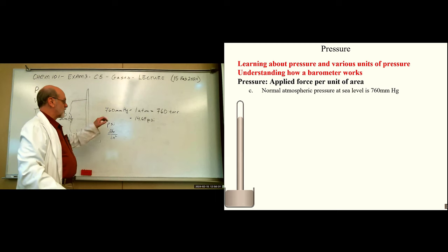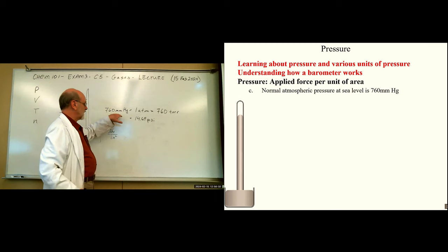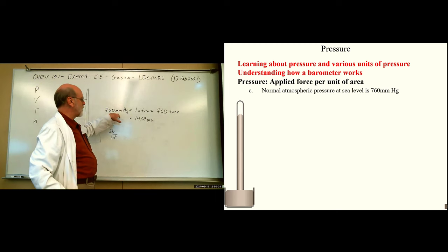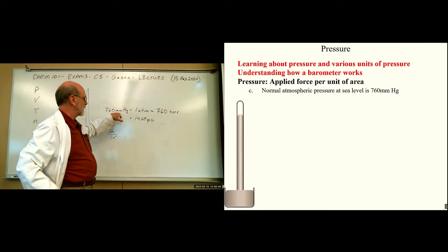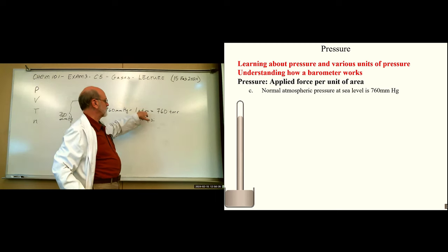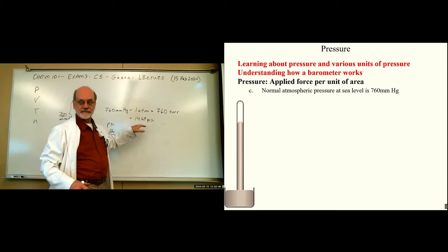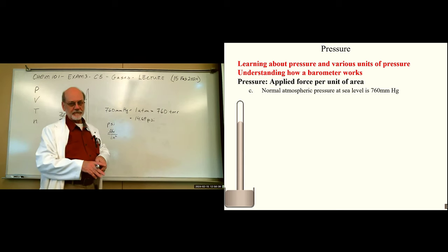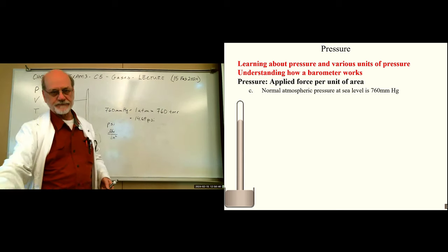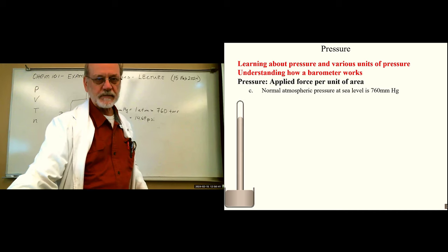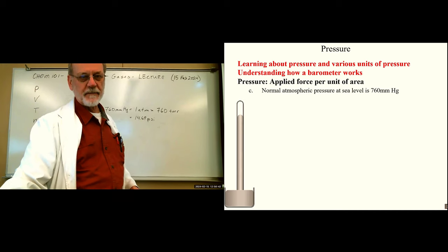Pressure is defined as force per unit area. When we measure pressure in the tires of our car, we measure it in PSI — pounds per square inch. That's a ratio we can understand as an intensive property, because if you measure a larger area, you're going to have a larger force for the same pressure value. One atmosphere is 14.69 pounds per square inch, so we have those equalities. Whenever you have an equality, you have the potential for a conversion factor.